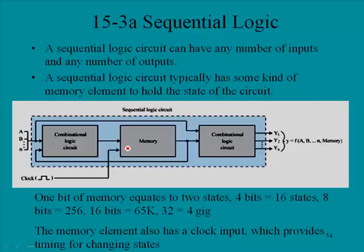The whole idea of memory is that you're going to be retaining certain states. If you had one bit of memory, this would equate to two states — one high and one low. If you had four bits of memory, there would be 16 possible states. Eight bits gives 256, 16 bits gives 65K, and 32 bits would give 4 gig.